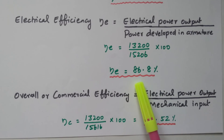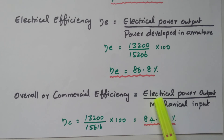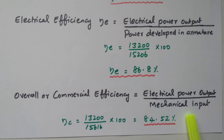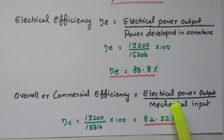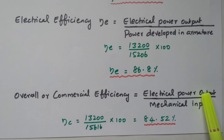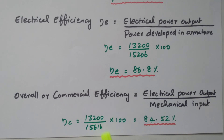Now we can calculate the overall or commercial efficiency = electrical power output / mechanical power input. The mechanical input is the primary input at 15,616 watts; the primary output is electrical power output at 13,200 watts, with stray losses and then copper losses in between. So: 13,200 / 15,616 × 100 = 84.52%. The overall efficiency is 84.52%.